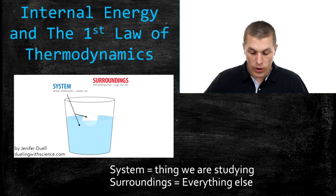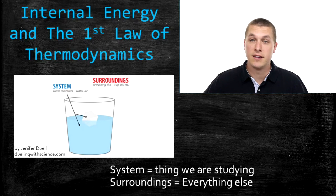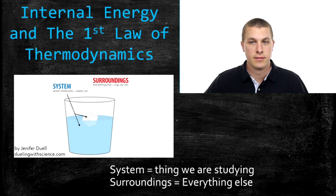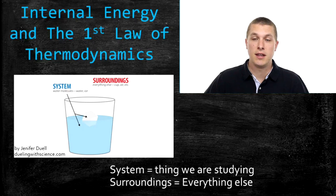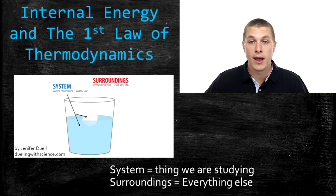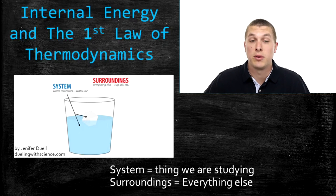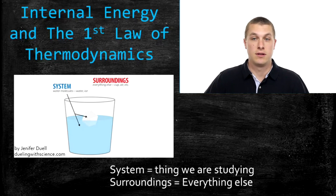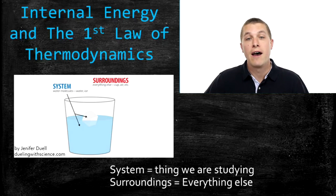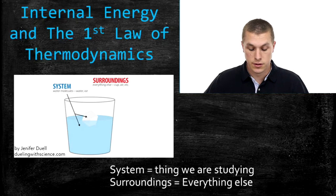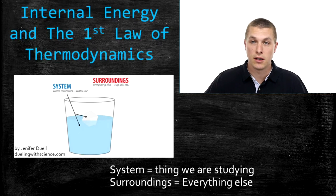The basic idea is we're thinking about the transfer of energy between the system and the surroundings. The system is just anything we're interested in. So if you're in the chemical laboratory and you're using a Bunsen burner to heat some chemical sample, our system might be that sample. The surroundings is the laboratory, the room, everything else. So the system is just the thing we're studying, and the surroundings is everything else.